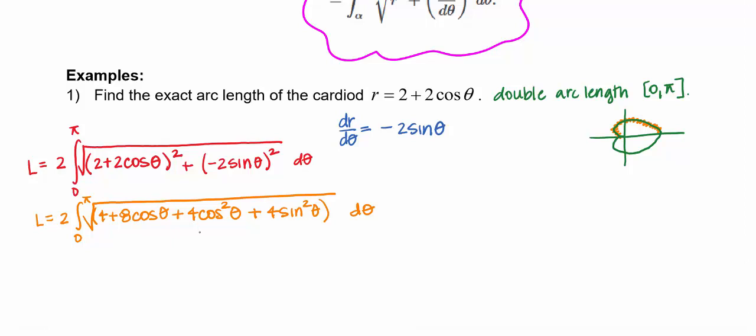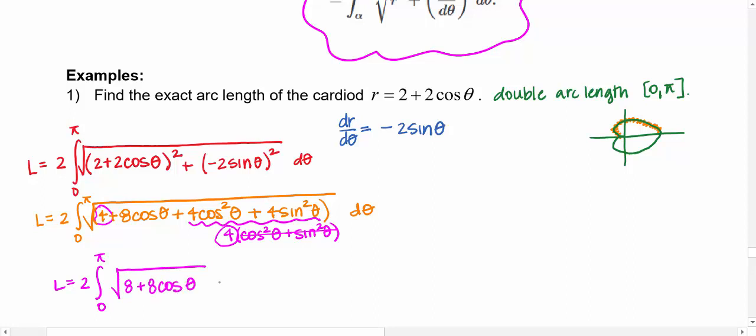And that's good because I have 4 cosine squared theta plus 4 sine squared theta. So if I factor out the 4, I can see the Pythagorean identity here. So this is all 1. So 4 times 1 is 4. So I have 4 plus 4. So that'll be 8 plus 8 cosine theta.